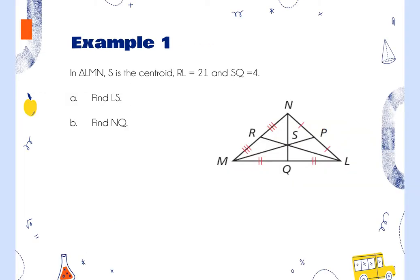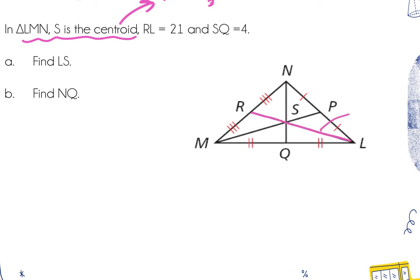Example one: in triangle LMN, S is the centroid. RL is 21 and SQ is 4. The problem tells you it's the centroid, which leads to the two-thirds theorem. To find LS — since LS is two-thirds of RL — divide 21 by 3 to get 7, then multiply by 2 to get 14.